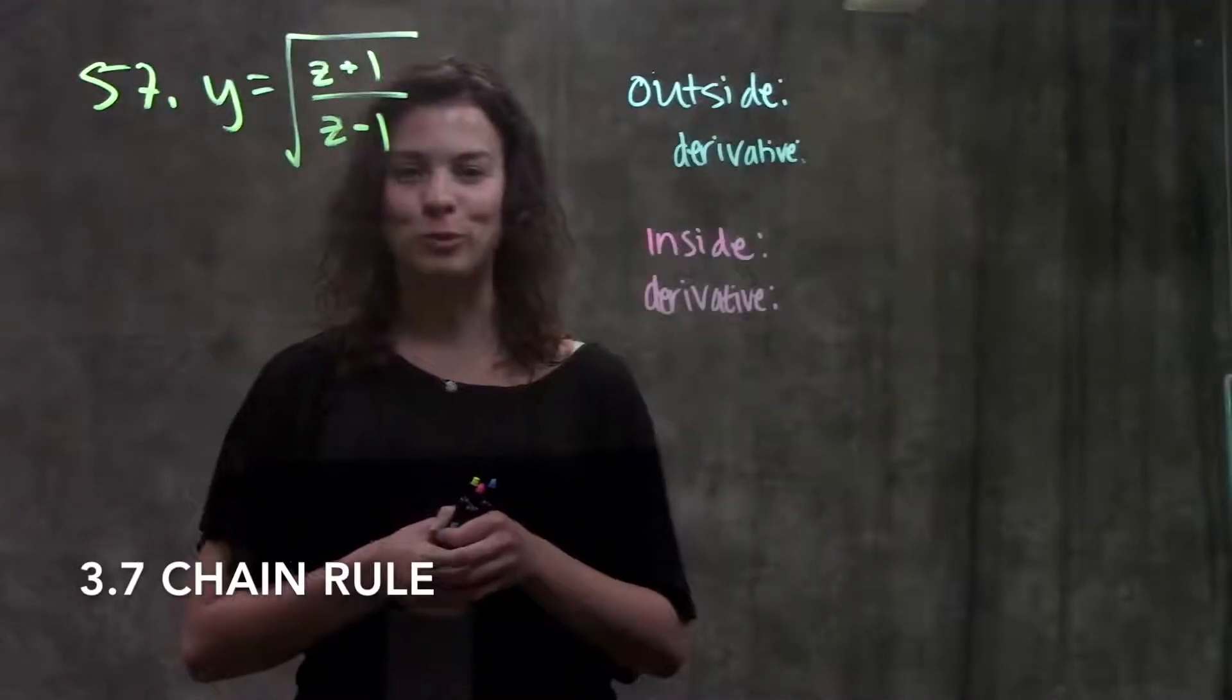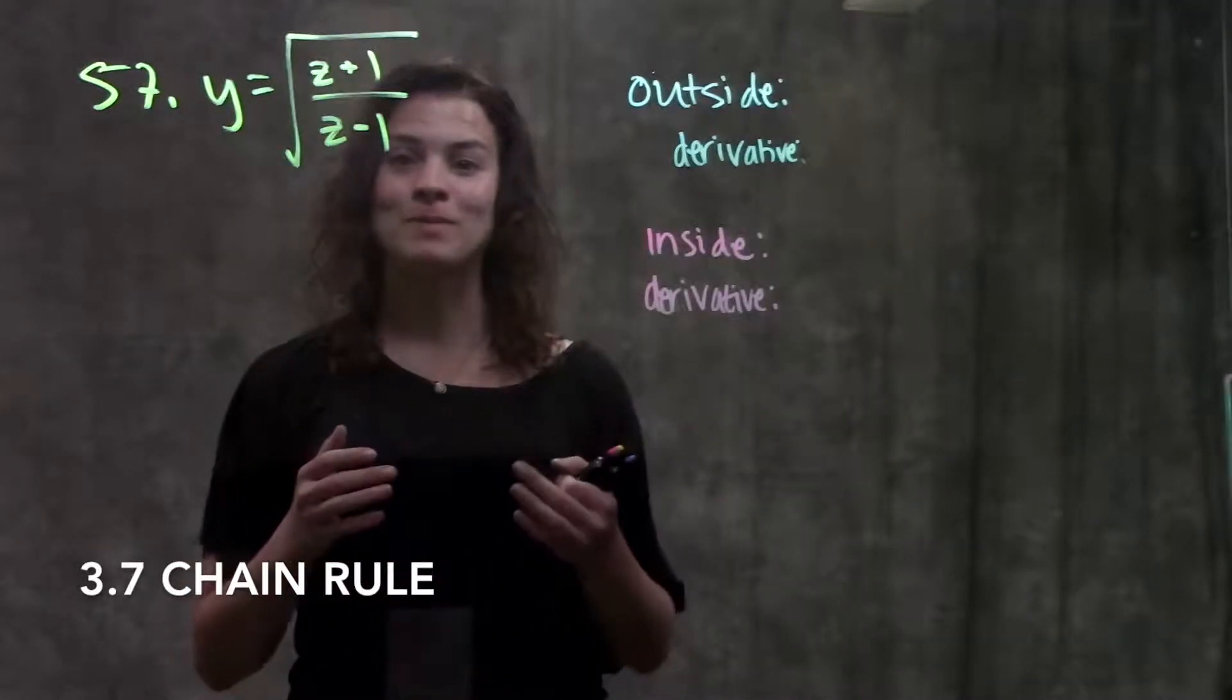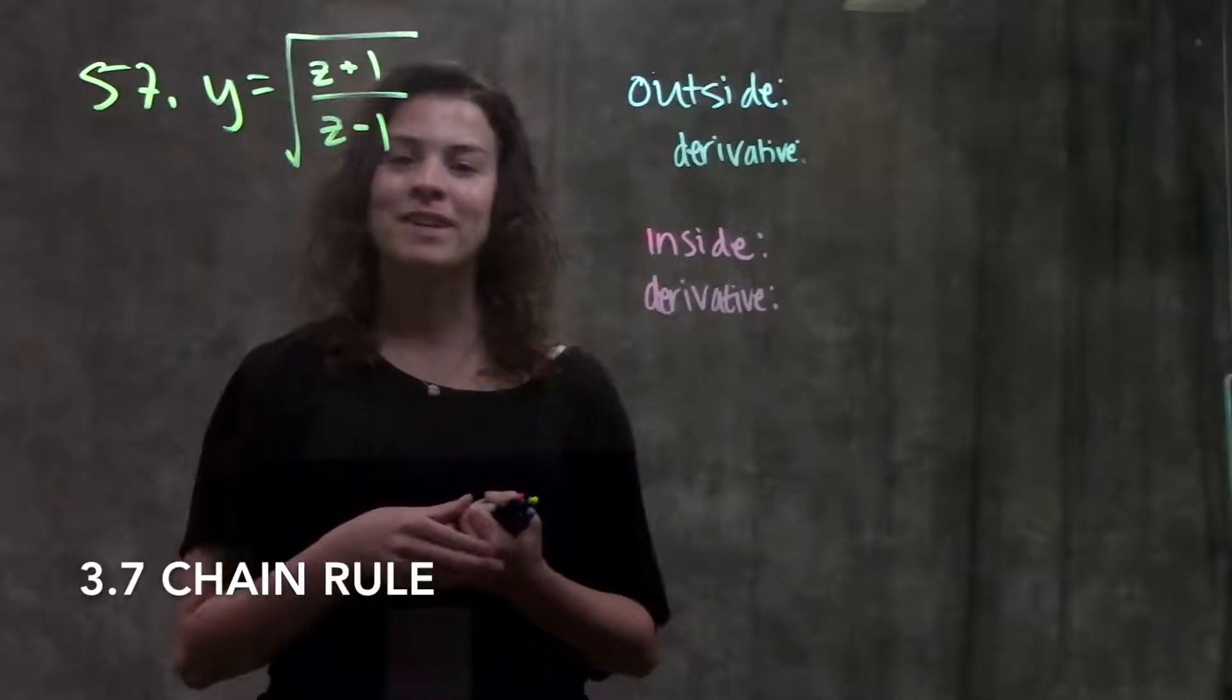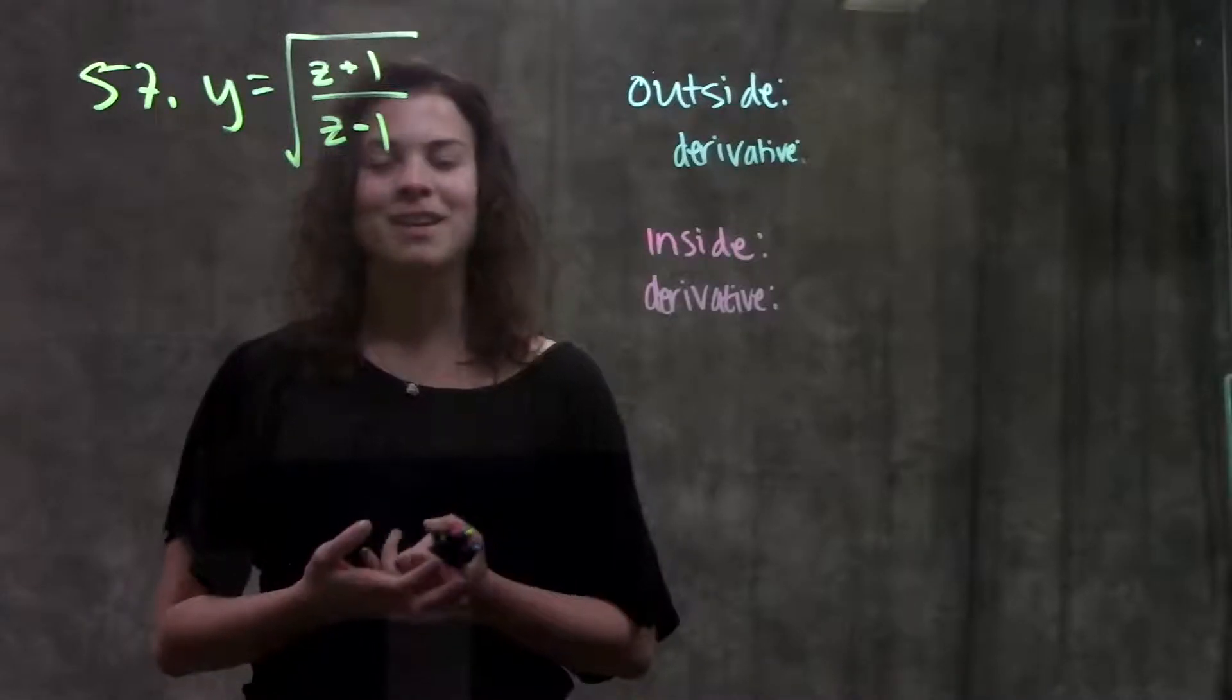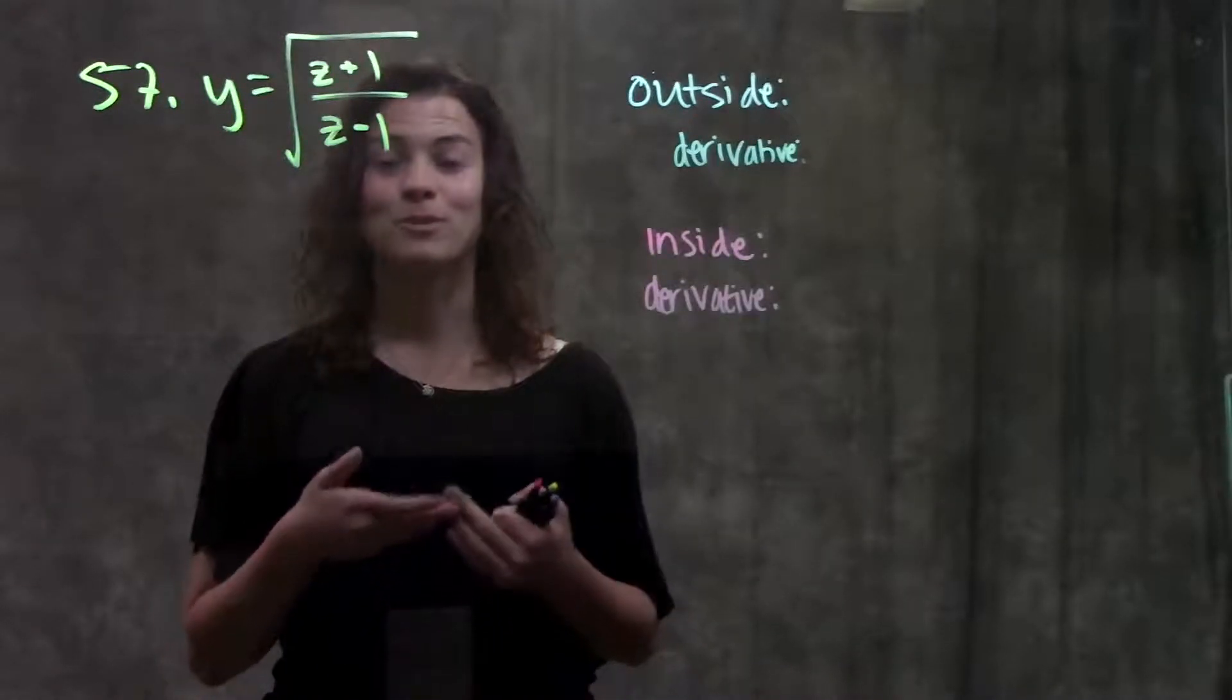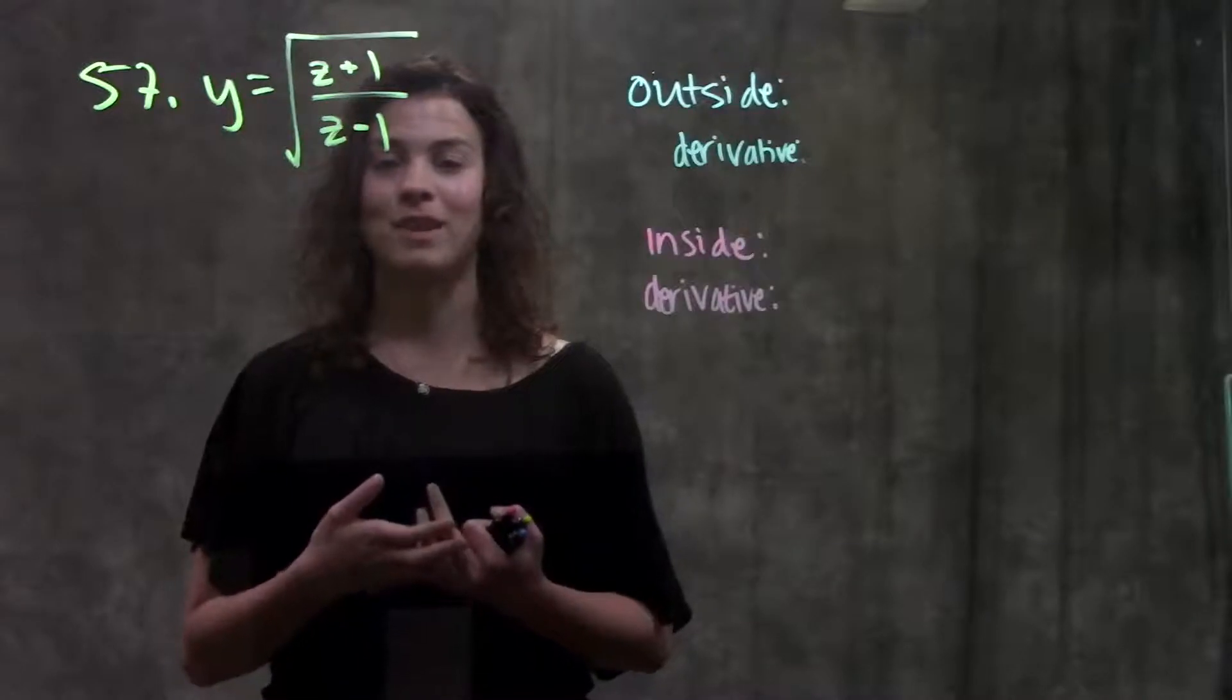This is section 3.7 chain rule. Chain rule is kind of the ultimate derivative rule. It tells us how to take the derivative when we have a function within a function, which actually happens a lot. So we'll be using this rule for the rest of the semester. So it's really important that you get a really good handle of it early on.